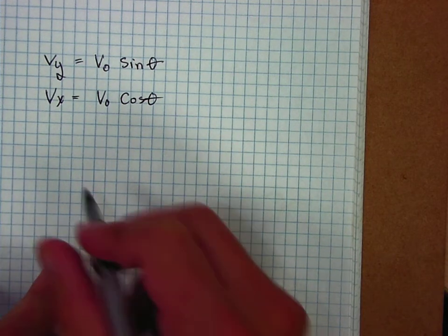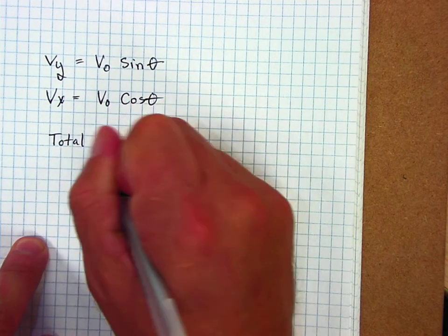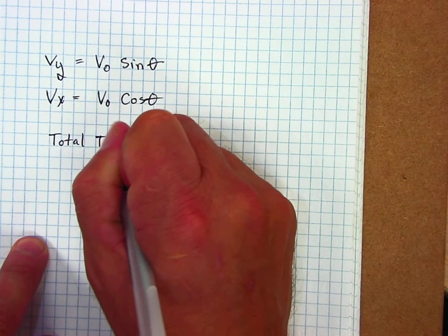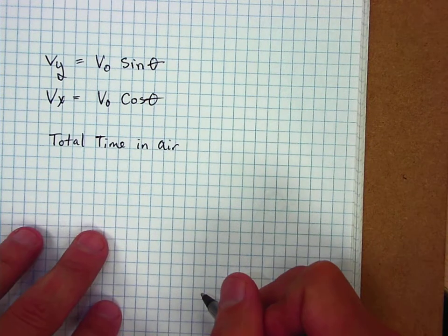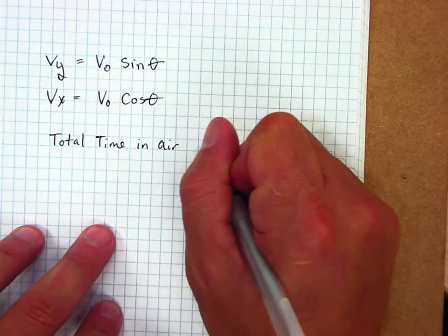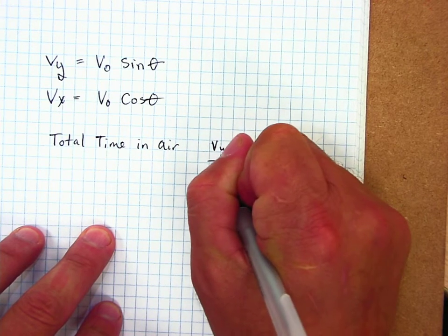I can find total time in the air, sometimes it will be called hang time, by taking the v_y divided by gravity.